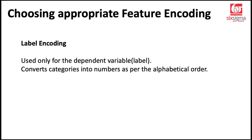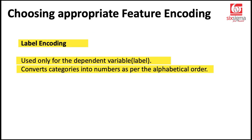Coming to label encoding. First of all, label encoding is supposed to be used only for the target variable. So if you're doing a predictive modeling task and your target column is categorical in nature, that's only when label encoding is applicable. It converts the categories into numbers as per the alphabetical order — it doesn't rely on any other order, but goes by the alphabetical order.